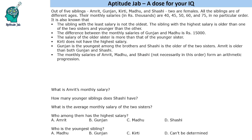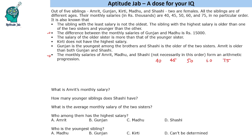As I keep telling in my videos, wherever you have number-based data — like salaries and statements about differences and arithmetic progressions — try to arrange by salary rather than by names. One common approach is to write names first and then salary, but I recommend going by the numbers first. So let's make a table with columns 40, 45, 50, 60 and 75, and then map the person, age and gender against each salary.